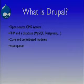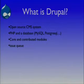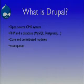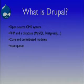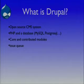So how is Drupal evolving? Everything is built around the issue queue. If you want a new feature or find a bug, you post an issue, and some of the more experienced people from Drupal will come in and write a patch, and then the feature will be implemented in Drupal.